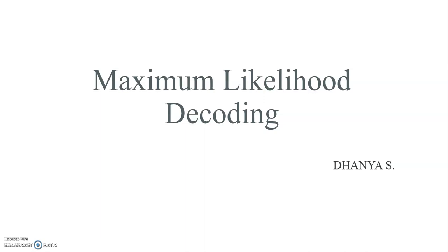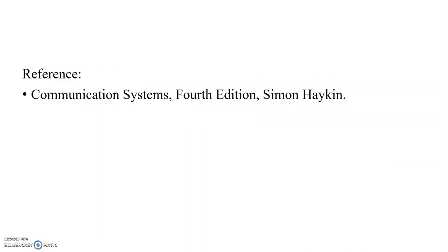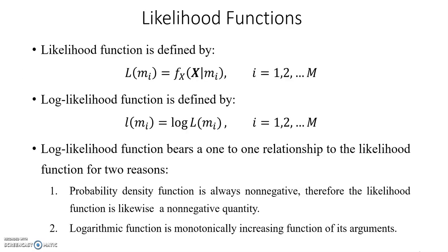Hello, today I have a short section about maximal likelihood decoding. The reference is Simon Haykin. First, you have an idea about what the likelihood function is. The likelihood function is actually defined as the conditional probability density function. That is, the likelihood function of m_i is the conditional probability density function of x given m_i. Usually, instead of the likelihood function, we use the log likelihood function — both have a one-to-one relationship. The log likelihood function is the logarithm of the likelihood function. One key characteristic: the logarithmic function is a monotonically increasing function.